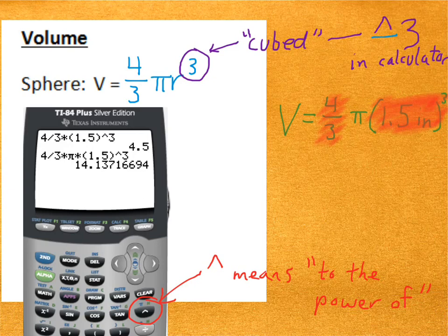So, when I want to type 1.5 to the third power, I would type it like this. 1.5 in parentheses, then caret 3. So, meaning to the power of 3.